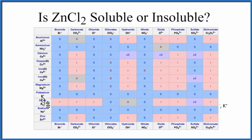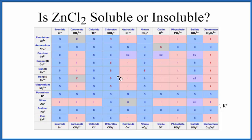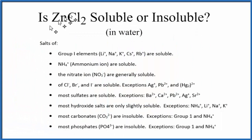We could also look at a solubility chart. On the chart we have the positive ions here, and here's zinc. The negative ions are across the top — here's the chloride. Going over and down, we get an 'S', which tells us zinc chloride is soluble in water. Both the chart and the solubility rules confirm that zinc chloride (ZnCl₂) is soluble in water.